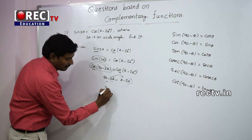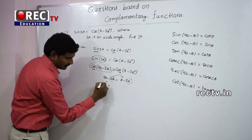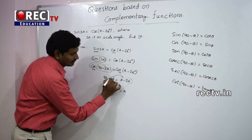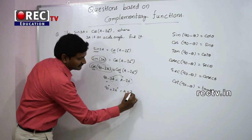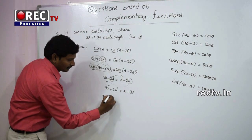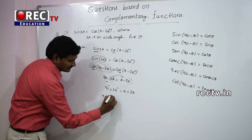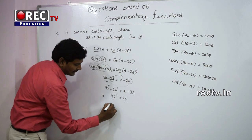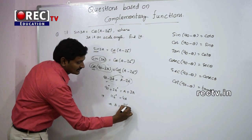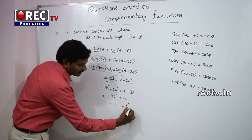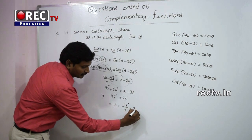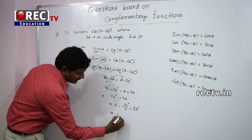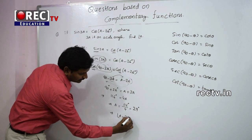Bringing -3A to the right side and -26° to the left side: 90° + 26° = A + 3A, which gives 116° = 4A, so A = 116° ÷ 4 = 29°. Therefore, angle A = 29°.